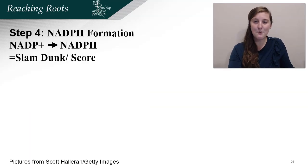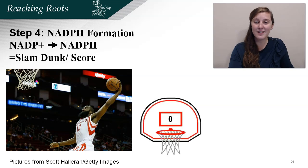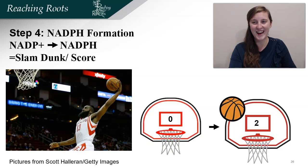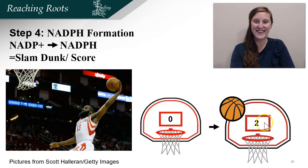The halftime show is when the basketball players take a brief break and watch something exciting — a cheerleading routine, a light show, and music. In step four, right after step three which was the halftime show, we have NADPH formation — the basketball players doing something really amazing: a slam dunk. That slam dunk relates to NADP+ because the basket has zero points, and once you have a slam dunk you get two points added — just like adding two electrons and a hydrogen to the NADP+ molecule. So then we have NADPH, full of energy to enter the Calvin cycle.